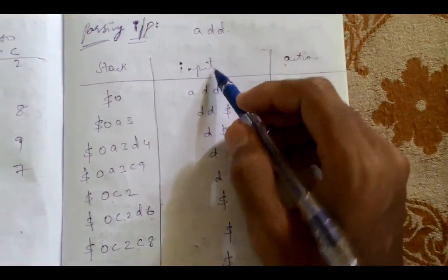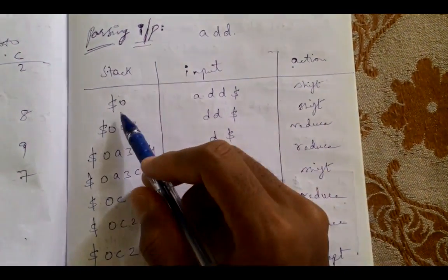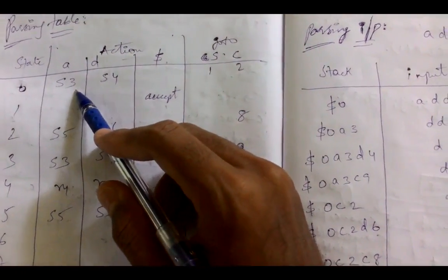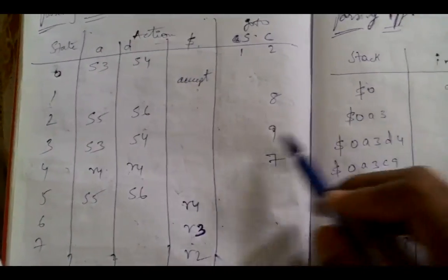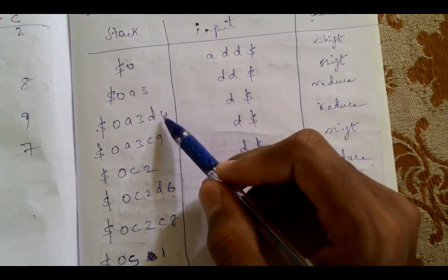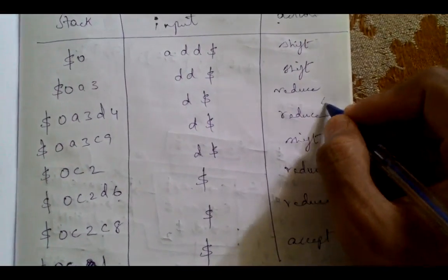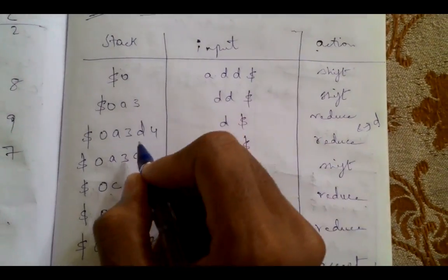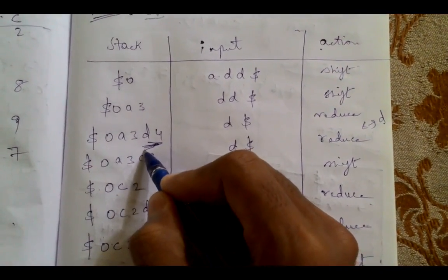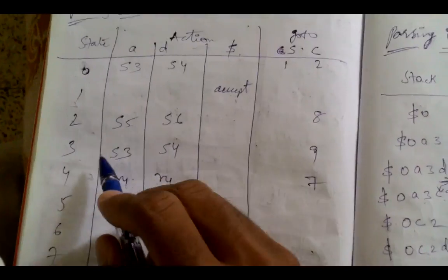For the parsing walkthrough, the input is appended with the dollar symbol. Stack starts at 0. State 0 on input 'a' gives shift 3, so we shift 'a' and move to state 3. State 3 on 'd' gives shift 4, so we shift 'd' and move to state 4. State 4 on 'd' has a reduce instruction: C → d, one symbol on the right-hand side, so we pop two elements and reduce to C.